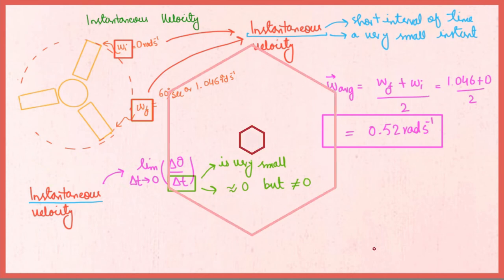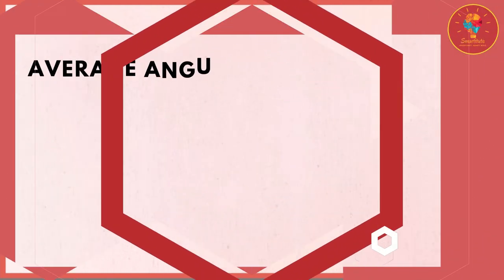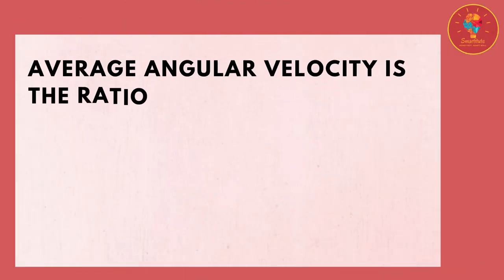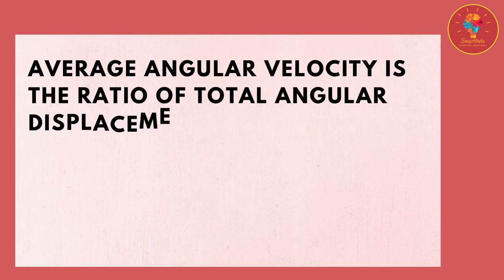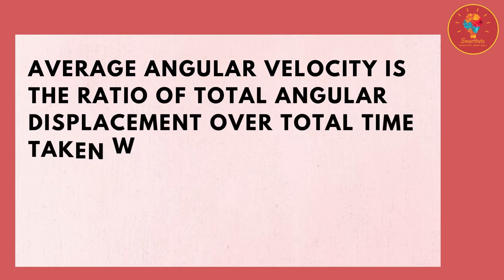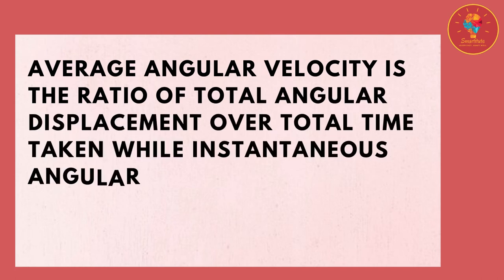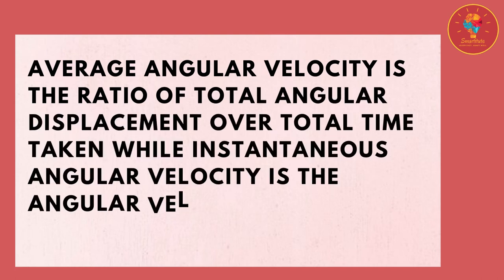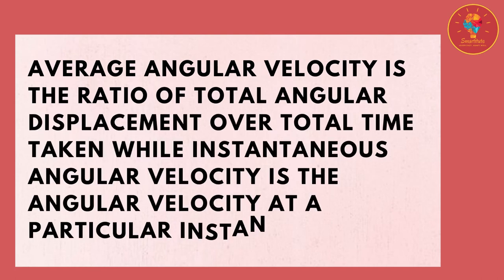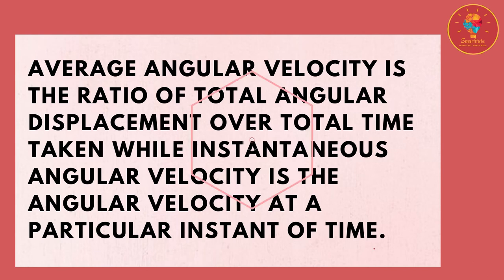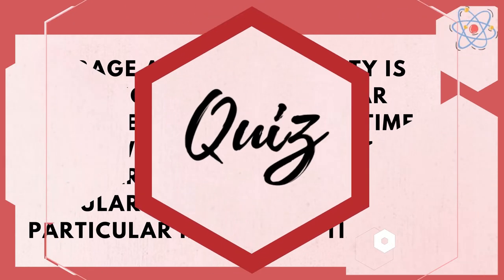In short, average angular velocity is the ratio of total angular displacement over total time taken, while instantaneous angular velocity is the angular velocity at a particular instant of time.